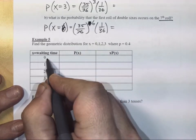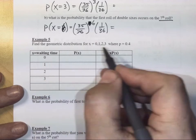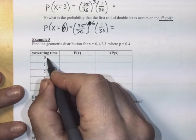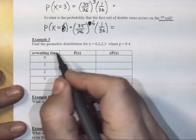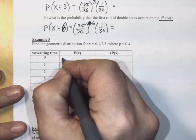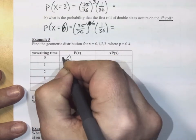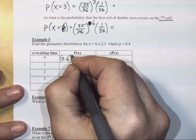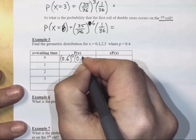X is waiting time. So if the waiting time is zero and P is 0.4, then the probability of waiting zero trials is Q, 0.6, raised to the zero, good, times 0.4.